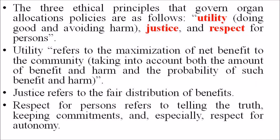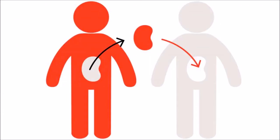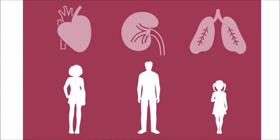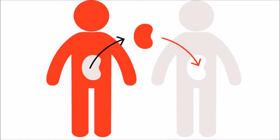Utility, justice, and respect for person. Utility refers to the maximization of net benefit to the community. Justice refers to the fair distribution of benefits, and respect for person refers to telling the truth, keeping commitments, and especially respect for autonomy. The ethics committee realized that recommendations are for policy in a pluralistic society in which individuals may hold conflicting yet reasonable positions on organ allocation. The three ethical principles individually may lead to policies that conflict with each other. Therefore, the principles have to be balanced in order to achieve an equitable outcome.